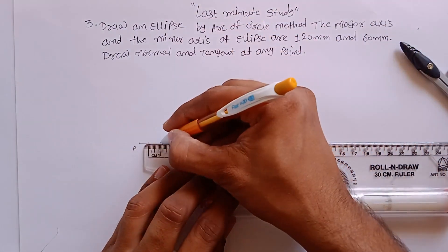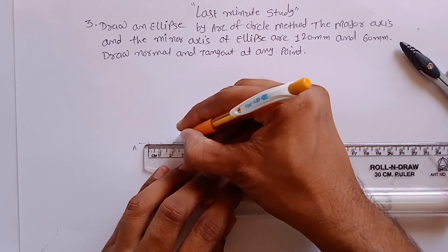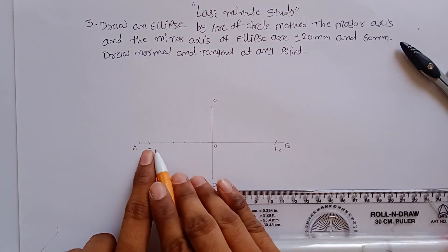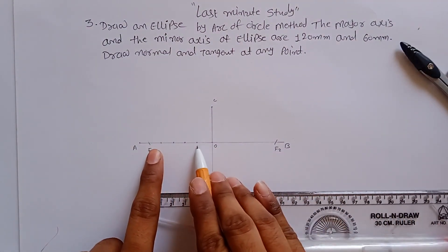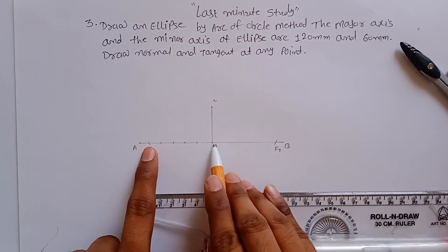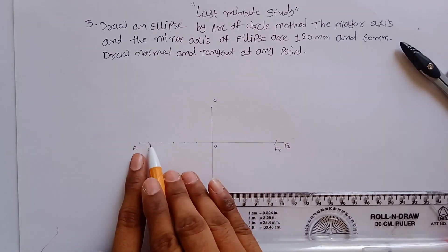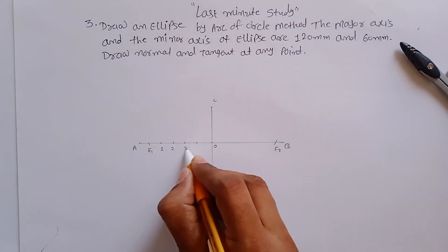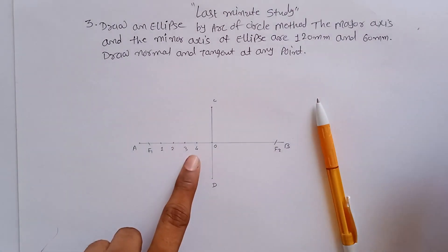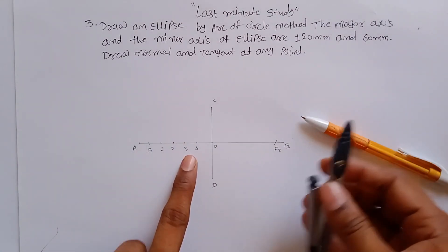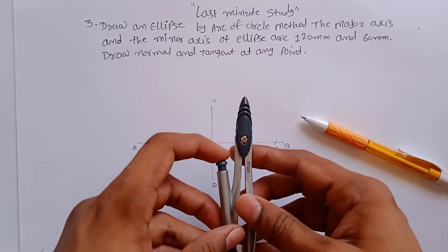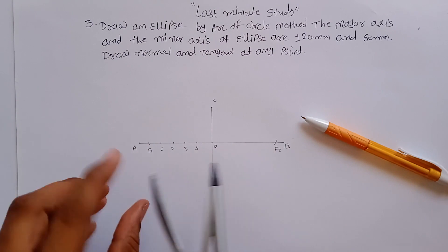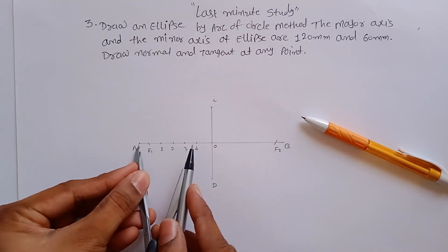From F1 to O, you have to mark two to three points — it depends on you. I'll mark one, two, three, and four points, with a distance of one centimeter each. You don't have to divide this into equal parts; just measure from F1 and mark points 1, 2, 3, and 4. If you take fewer points, you cannot get a proper ellipse.